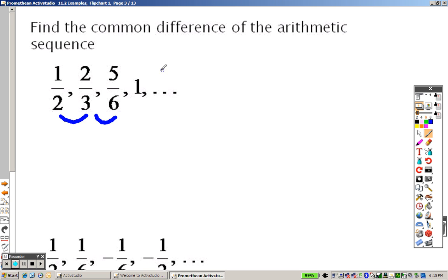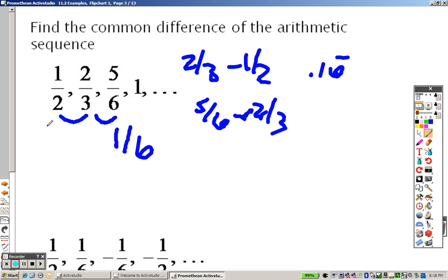So basically, all you need to do is take 2 thirds and minus 1 half. Take 5 sixths and minus 2 thirds. And whatever you get, if it happens to be the same thing, so for this one, I end up getting 0.16 repeated, and 5 sixths minus 2 thirds is the same, so it's actually going down by 1 sixth every time.